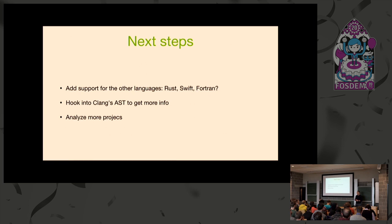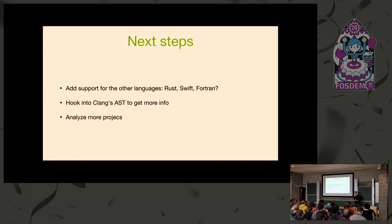Our next steps for this project are to make it stable and add more language features — Rust, Swift, Fortran. We've also started working on hooking back into Clang and the AST to extend the bitcode-based CPG representation so we don't have to rely on debug information, because debug information doesn't always work reliably especially across different versions of LLVM and compilers. We also want to analyze more projects to find results — our colleague Fabian analyzed the Linux kernel and found previously unknown vulnerabilities, and we want to do similar things with other projects.